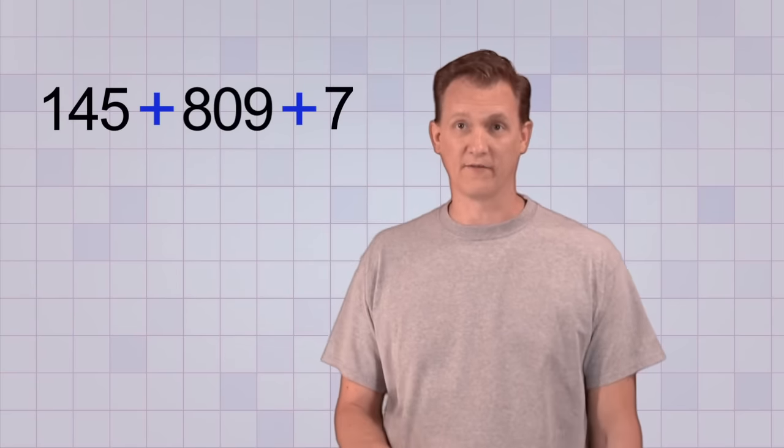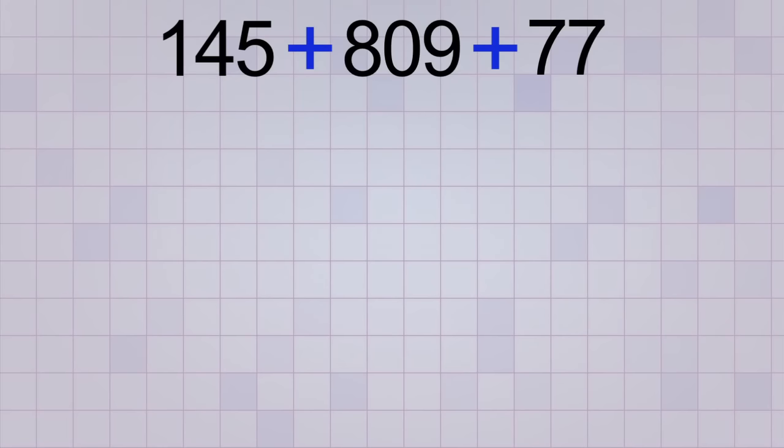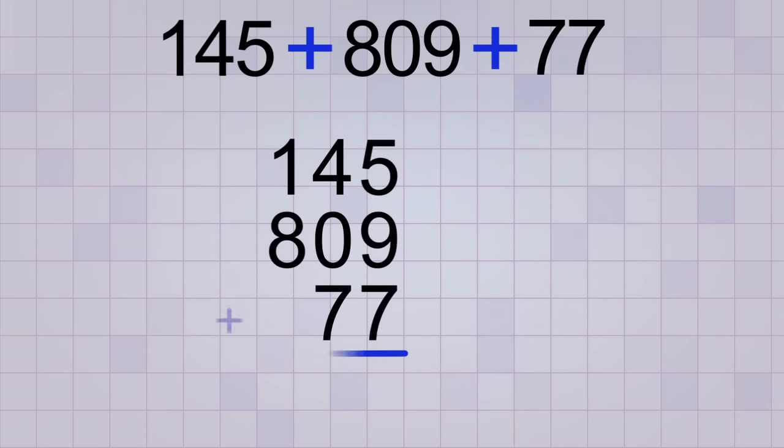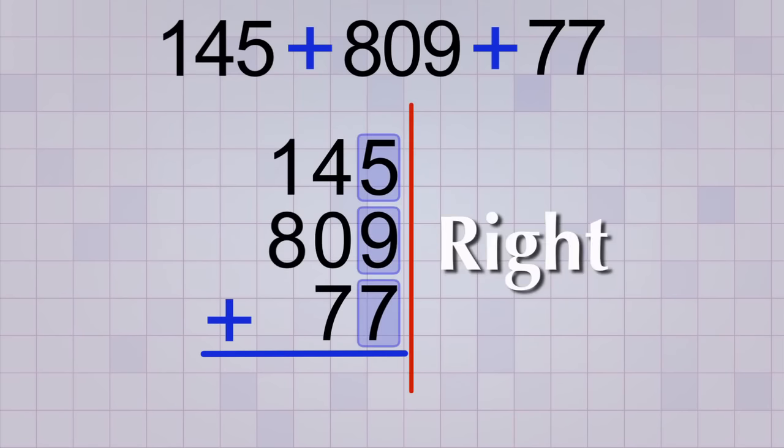Think you've got it so far? Let's try one more together before you do some of the exercise problems. Let's add up these three numbers: 145, 809, and 77. We start the same way, stacking the numbers up and making sure all the ones places line up in a column on the right.